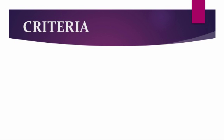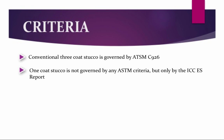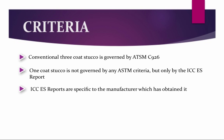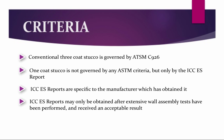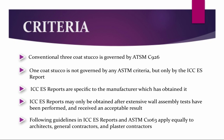Criteria for stucco is as follows. Conventional Three Coat Stucco is governed by ASTM C-926. One Coat Stucco is not governed by any ASTM standards, but only by the ICC-ES report. ICC-ES reports are specific to the manufacturer which has obtained them and may only be obtained after extensive wall assembly tests. Following guidelines in ICC-ES reports and ASTM C-1063 apply equally to architects, general contractors, as well as the plaster contractors.